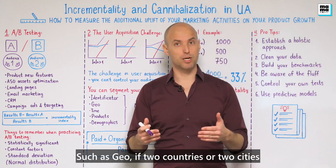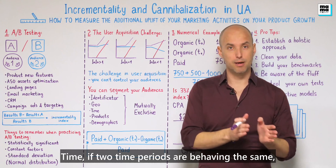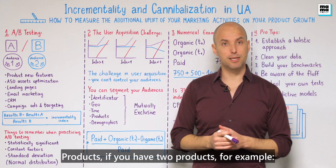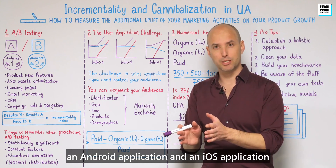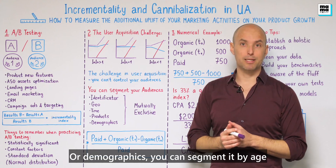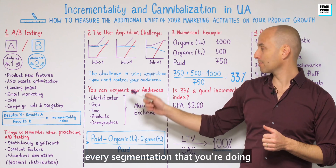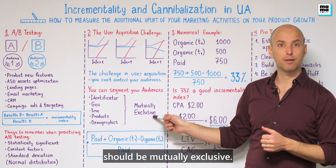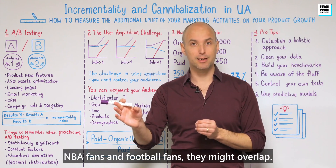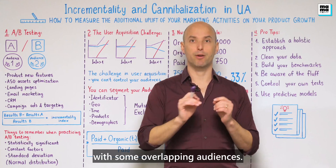You can segment by time, if two time periods are behaving the same; by cohorts; by products — for example, Android application and iOS application if they are behaving relatively the same; or by demographics, such as age or gender. Just make sure that every segmentation you do is mutually exclusive. If you segment your audience by, say, NBA fans and football fans, they might overlap — and you don't want to run A-B testing with overlapping audiences.